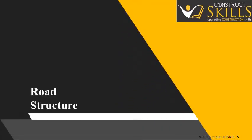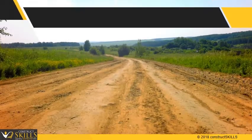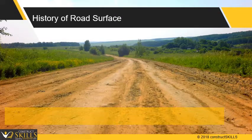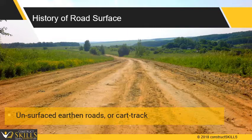This chapter gives an overview of pavement types, layers, and their functions. The old roads were unsurfaced earthen roads, or cart track roads. Eventually, the earthen roads were improved with natural soil from borrow pits, with attention to drainage.